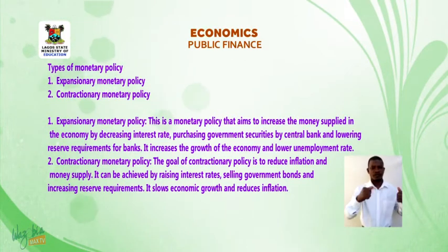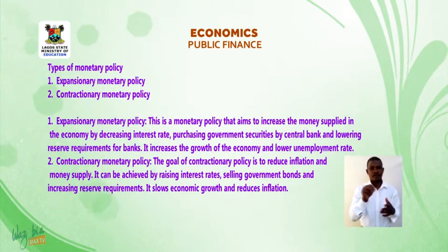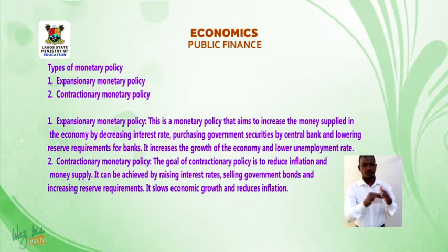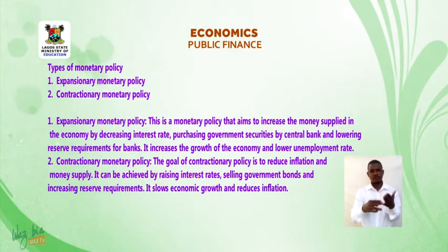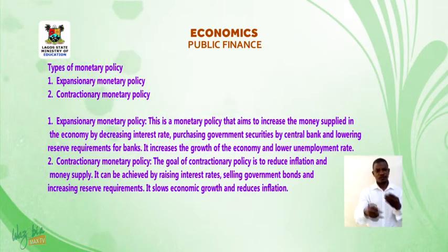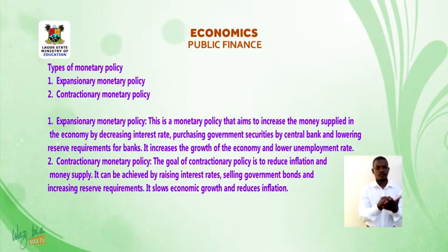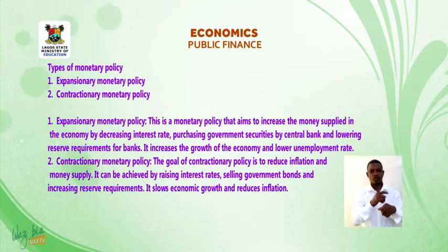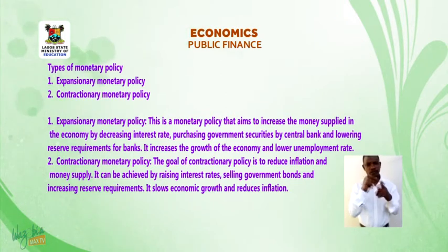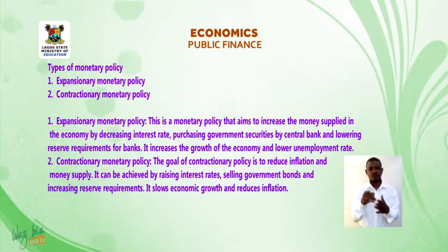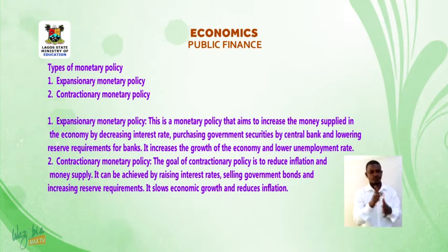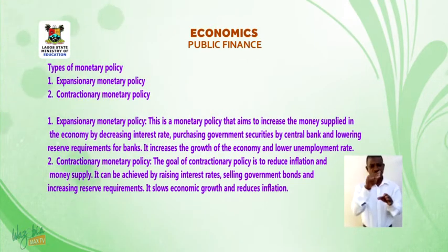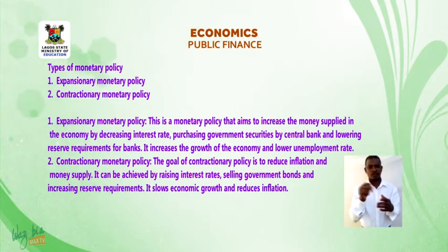Types of monetary policies: one, expansionary monetary policy; two, contractionary monetary policy. Expansionary monetary policy aims to increase the money supply in the economy by decreasing interest rates, purchasing government securities by the central bank, and lowering reserve requirements for banks. It increases economic growth and lowers unemployment rates. Contractionary monetary policy aims to reduce inflation and money supply, achieved by raising interest rates, selling government bonds, and increasing reserve requirements for banks. It slows economic growth and reduces inflation.